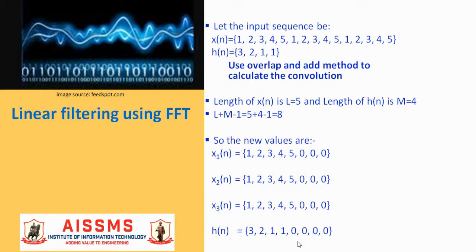Let the impulse response h(n) be 3, 2, 1, 1. Let us use overlap and add method to calculate the convolution. The long input data sequence is broken into subsequences of length 5, so L is 5. The length of h(n) is denoted by M and M is 4. So L plus M minus 1 becomes 8.